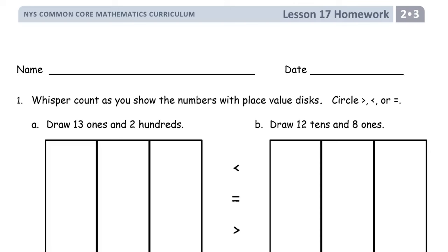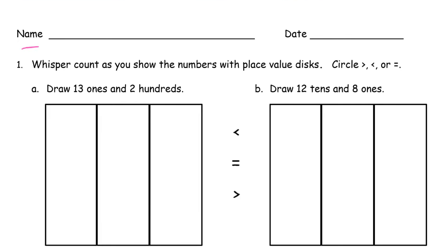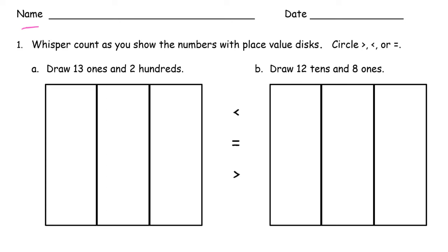Welcome to the homework for lesson 17. We're in grade 2 module 3. Get your name on there first. We're doing some more work with place value disks and HTO charts. Whisper count as you show the numbers with place value disks — we're going to draw them. And then we're going to circle greater than, less than, or equal to.